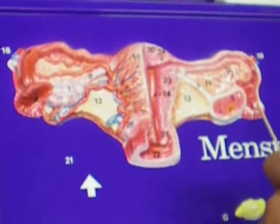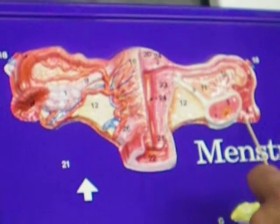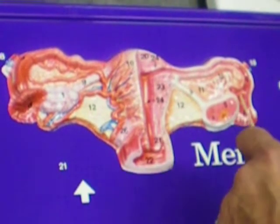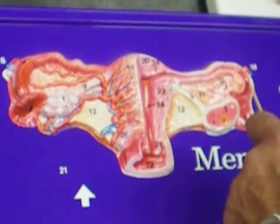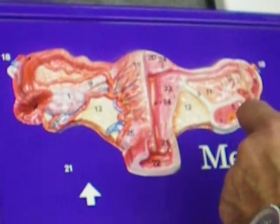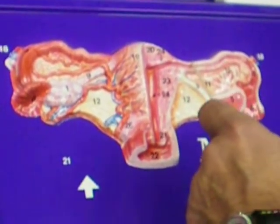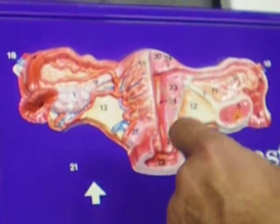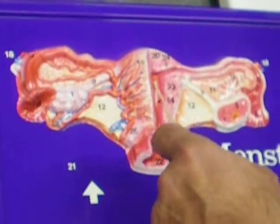Again, to recap the path: fimbriae, infundibulum, ampulla, isthmus, body of the uterus.